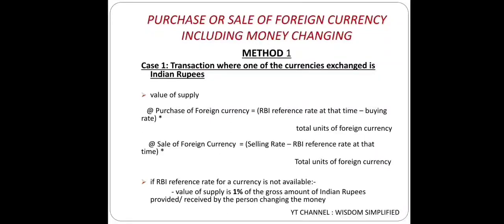If RBI reference rate for a currency is not available, both formulas won't work. In that case, Value of Supply becomes 1% of the gross amount of Indian Rupees provided or received by the person changing the money. Let's look at an example for more clarity.